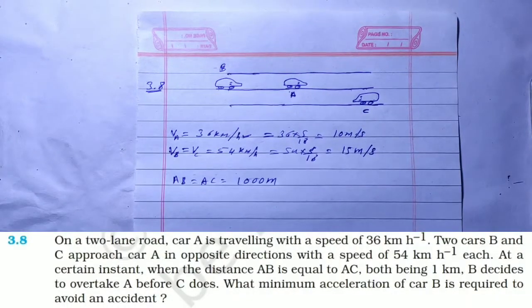NCERT solution, Chapter 3 Motion in a Straight Line, question number 3.6. On a two-lane road, car A is traveling with a speed of 36 km per hour. Two cars B and C approach car A in opposite directions with a speed of 54 km per hour each. At a certain instant when AB is equal to AC, both being one kilometer, B decides to overtake A before C does. What minimum acceleration of car B is required to avoid an accident?